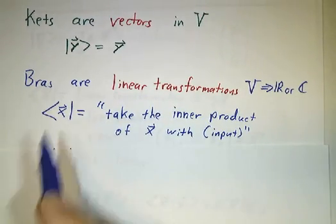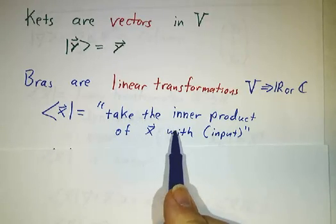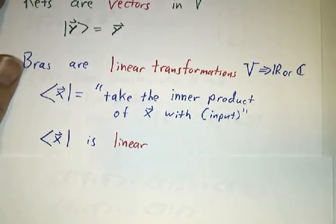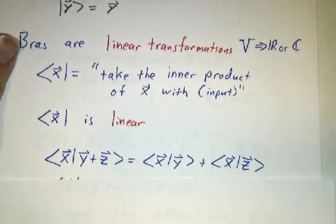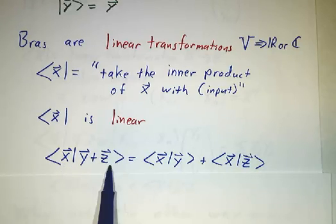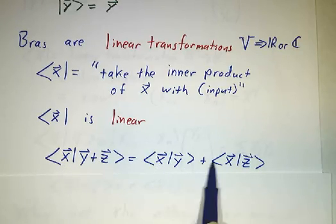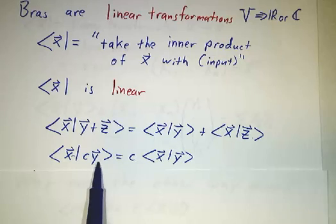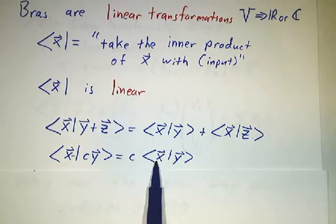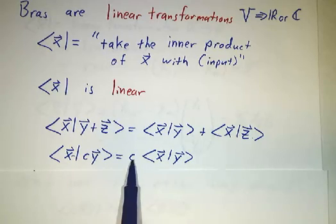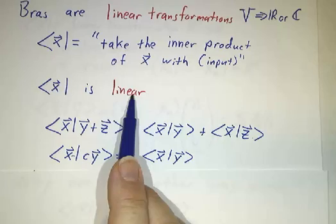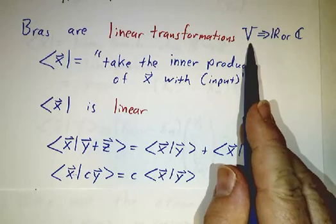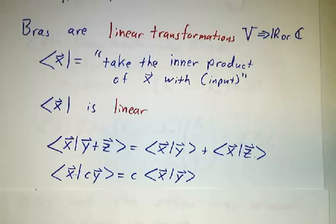What the bra x means is: take the inner product of x with whatever the input of the linear transformation is. This operation is linear because the inner product of x with y+z equals the inner product of x with y plus the inner product of x with z. And the inner product of x with a constant times y equals the constant times the inner product of x with y. So this bra is linear — it maps V to the reals or the complexes.